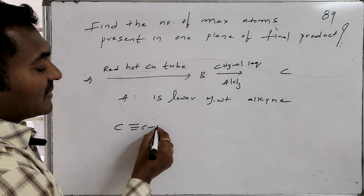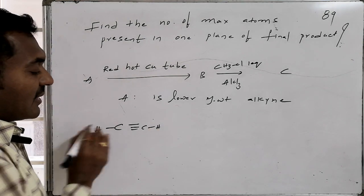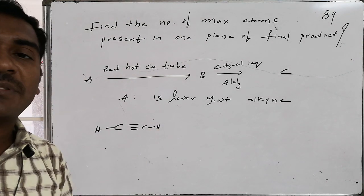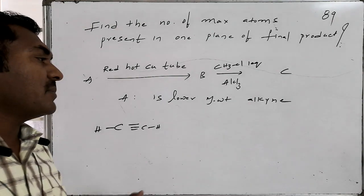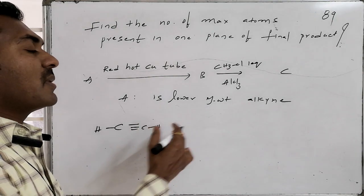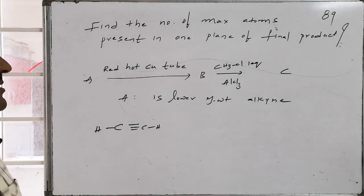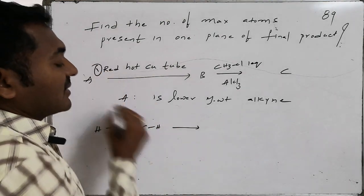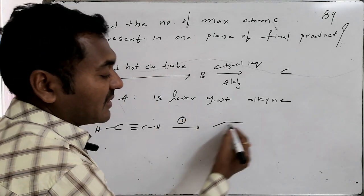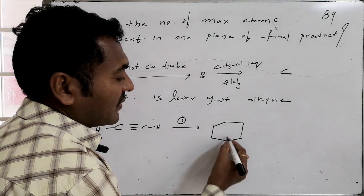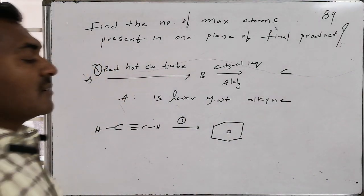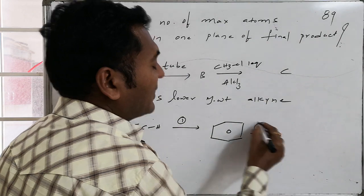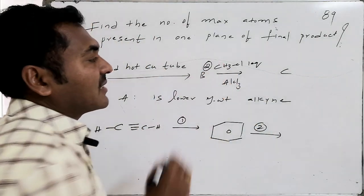The lower molecular weight alkyne is acetylene, since an alkyne requires a triple bond and the minimum two carbon atoms. This acetylene, when subjected to reaction condition one (red hot copper tube, high temperature), undergoes trimerization, resulting in the formation of benzene. So B is benzene.